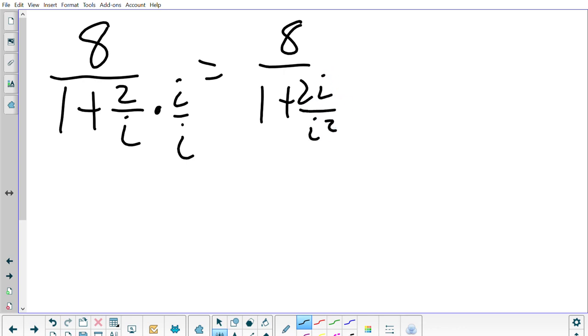i squared is just negative 1. So then I have 8 over 1 plus 2i over negative 1. Positive 2 and negative 1 turns into just negative 2i. Again, I don't like i on the bottom.